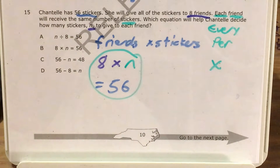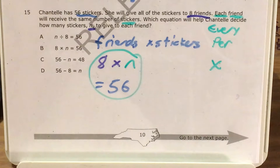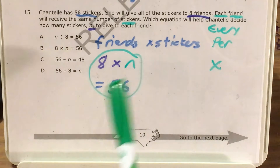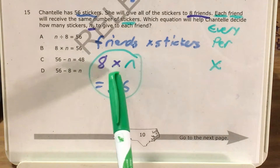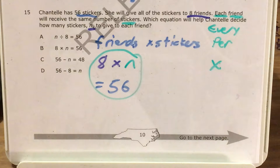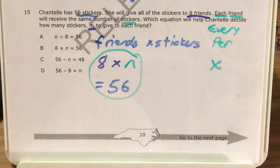We are not actually supposed to try and solve this. There have been other problems where we've had to actually solve the equation, but for now we're just looking for the answer choice that says something like eight times n equals 56.